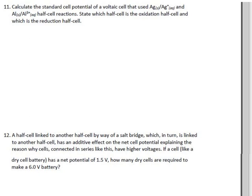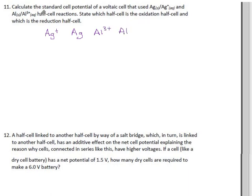Calculate the cell potential of a voltaic cell that uses silver and aluminum. A silver-aluminum cell. So what happens in a cell like that? We have silver ions, silver metal, aluminum ions, aluminum metal, and because they said aqueous, water is present too.